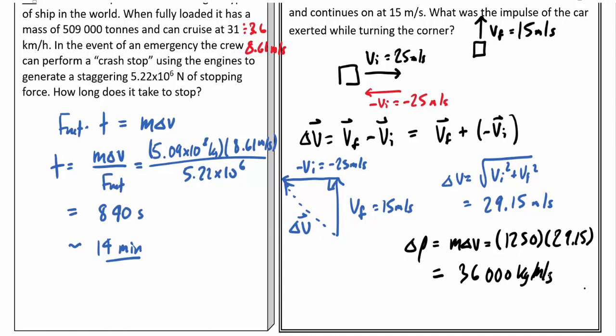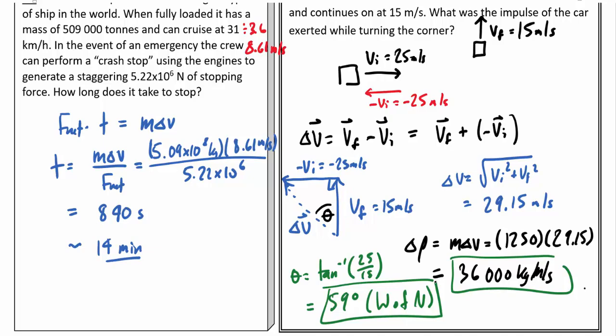Now, don't forget that this is a vector. And so we need to do this in two dimensions, which means we need to include a direction here given by that angle theta. And to find theta, I can just use the tangent and the opposite and adjacent sides. So theta is just going to be inverse tangent of 25 over 15. And so this gives me an angle of approximately 59 degrees. And if I want to be specific, that would be west of north. Alright. And there's my total solution. Alright. That's it for impulse.